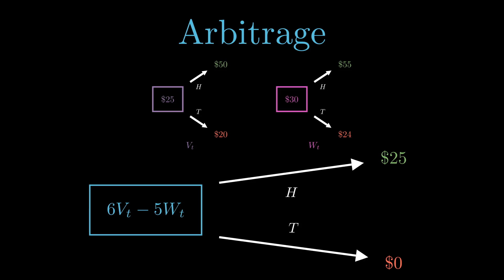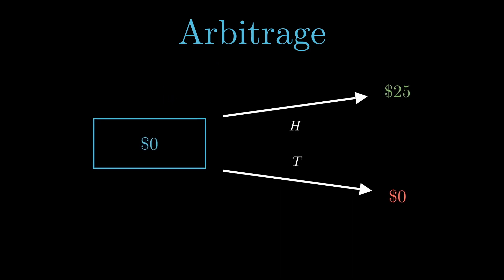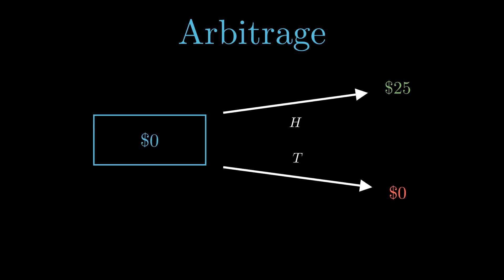Now notice what happens if we buy six of the first asset and short five of the second asset. We make $25 if we flip heads, and we make no loss if we flip tails. This entire strategy costs $0. Hence, this is an arbitrage opportunity, or in other words, there exists arbitrage in this market.